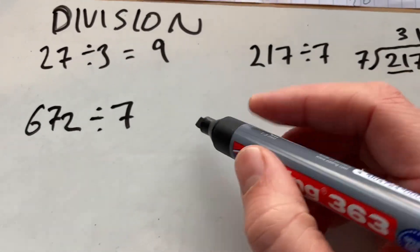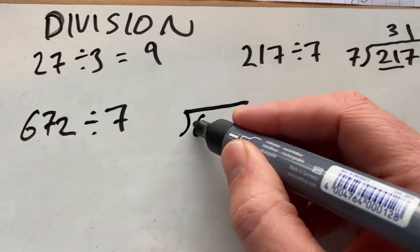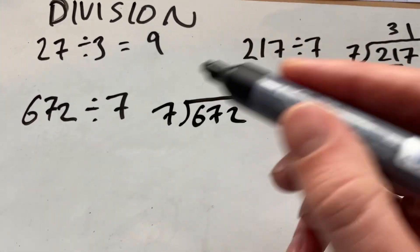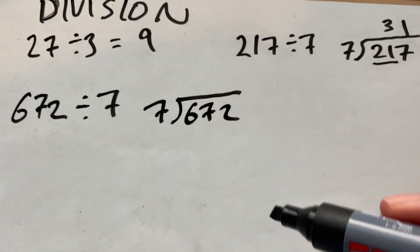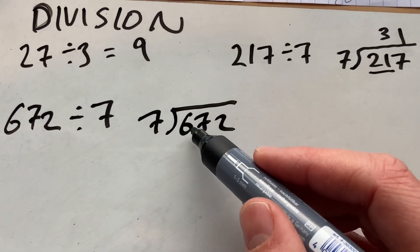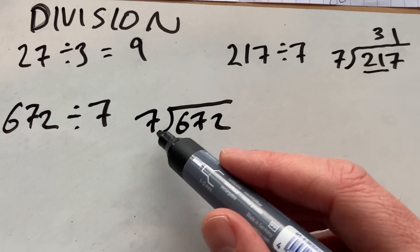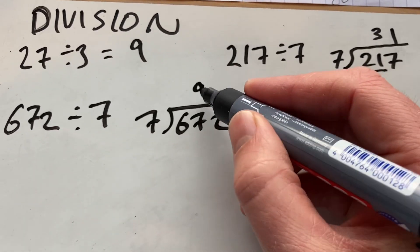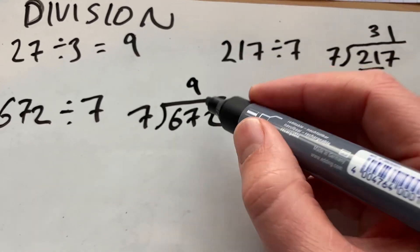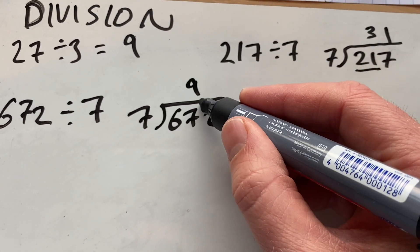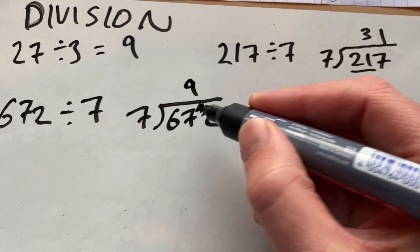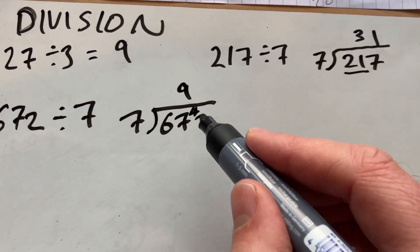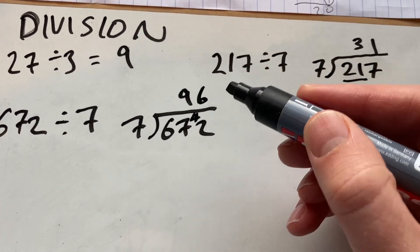So let's divide 672 by 7 using the bus stop method. 7 doesn't go into 6. It does go into 67 nine times because 9 times 7 is 63, leaving a remainder of 4. In short division, we put the 4 there. And then 7 goes into 42 six times.